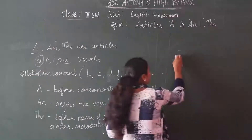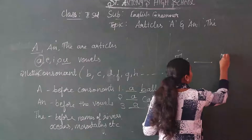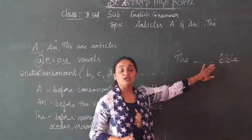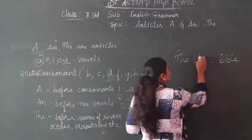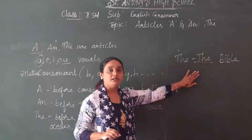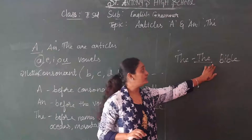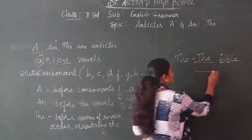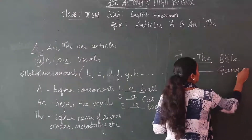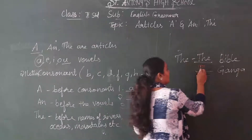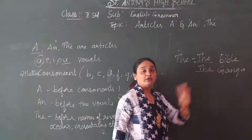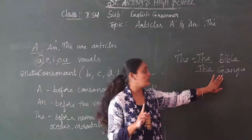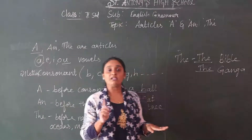For example, you have holy books like the Bible, the Quran — because they are only one, you don't have any other books like them. So these are unique. THE is used before the names of rivers, monuments, etc. So I have written BIBLE — it is a holy book. So how you write it? The Bible. Also, Ganga is a river — you have only one Ganga. So: The Ganga.